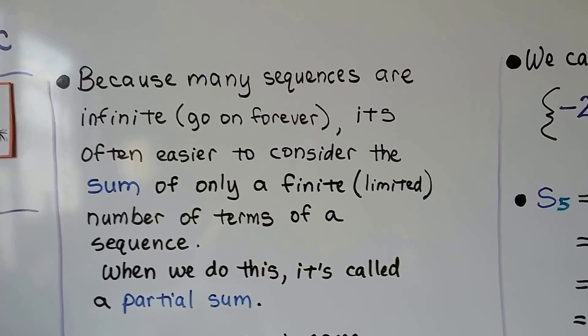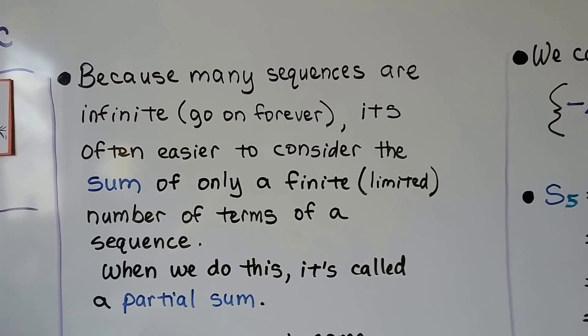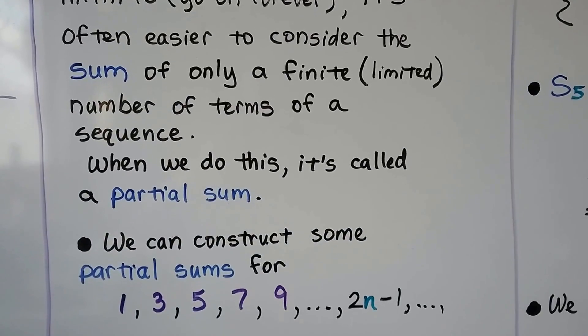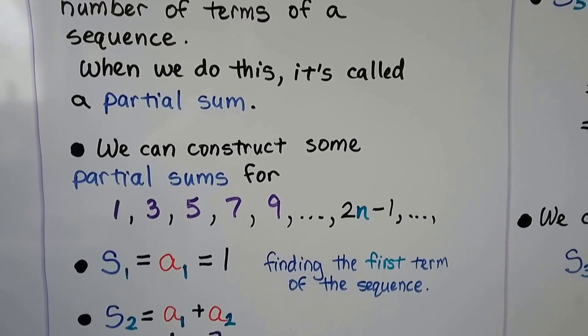Because many sequences are infinite, they go on forever, it's often easier to consider the sum of only a finite, limited number of terms of a sequence. When we do this, it's called a partial sum.